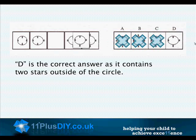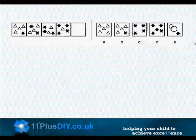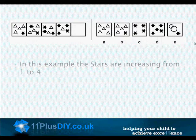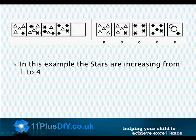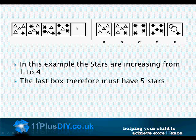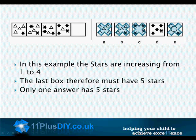In this example, the stars are increasing from one to four. The last box, therefore, must have five stars. Only one answer in the sequence has five stars. Therefore, the answer must be D.